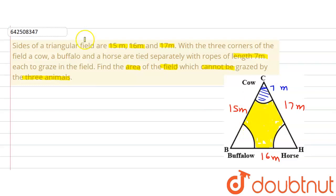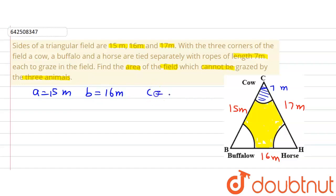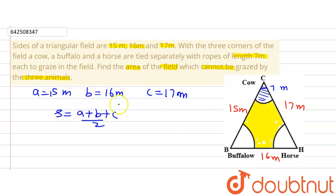Let's first find out the area of the triangle. We will find the area of the triangle using Heron's formula. We have a = 15 meter, b = 16 meter and c = 17 meter. So the semi-perimeter s will be equal to (a + b + c) / 2. Putting in the values we get (15 + 16 + 17) / 2 = 48 / 2 = 24 meter.